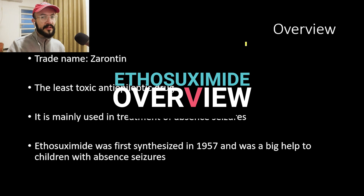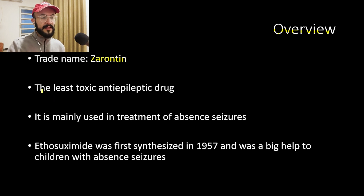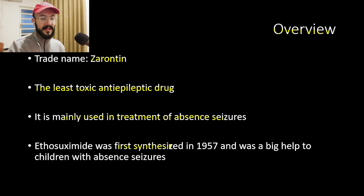In our talk about ethosuximide, we will start with an overview. A famous trade name for ethosuximide is Zarontin. Ethosuximide is the least toxic anti-epileptic drug, and it is mainly used in the treatment of absence seizures. It was first synthesized in 1957.